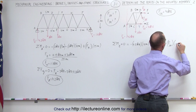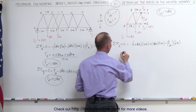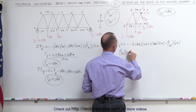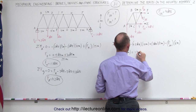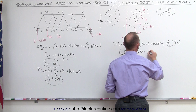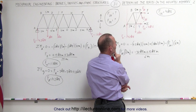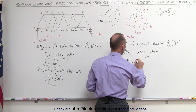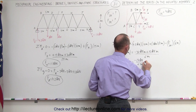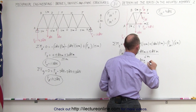All we have to do is move that to the other side of the equal sign. We get positive FDF times 6 meters equals negative 4.2 times 10, which is negative 42 kilonewton meters, plus 3 times 5, which is positive 15 kilonewton meters. Dividing both sides by 6 meters, negative 42 plus 15 is negative 27, so FDF equals negative 27 kilonewton meters divided by 6 meters. That gives us negative 4.5 kilonewtons.